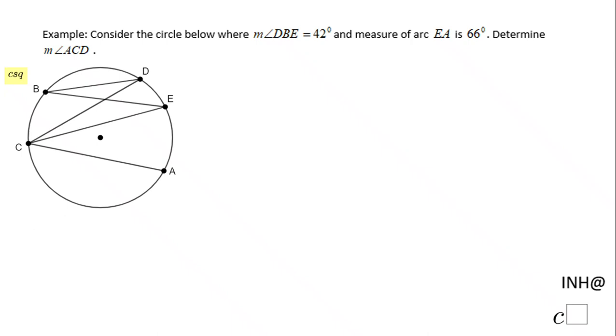Welcome back to InHelp at C-Square. In this example, we have a circle and we know the measure of angle DBE—this angle is 42 degrees—and the measure of arc EA, which is 66 degrees. We are asked to find the measure of angle ACD, which is this angle right here.